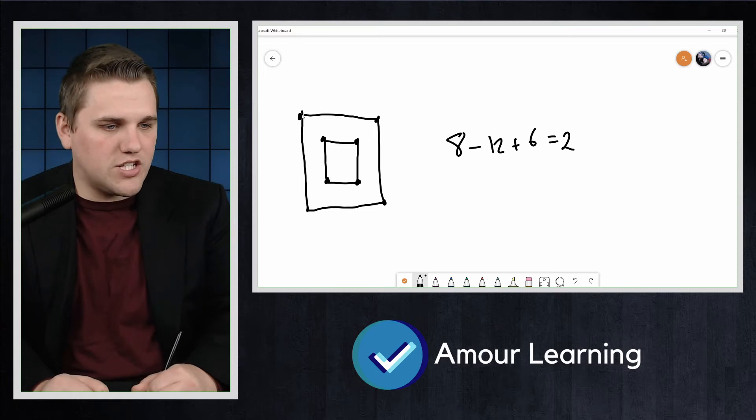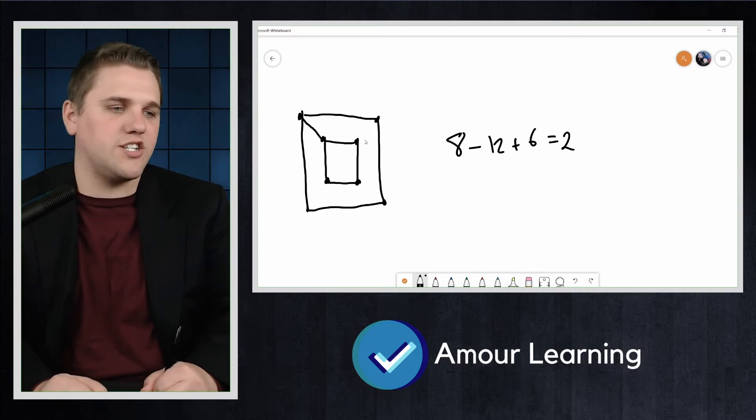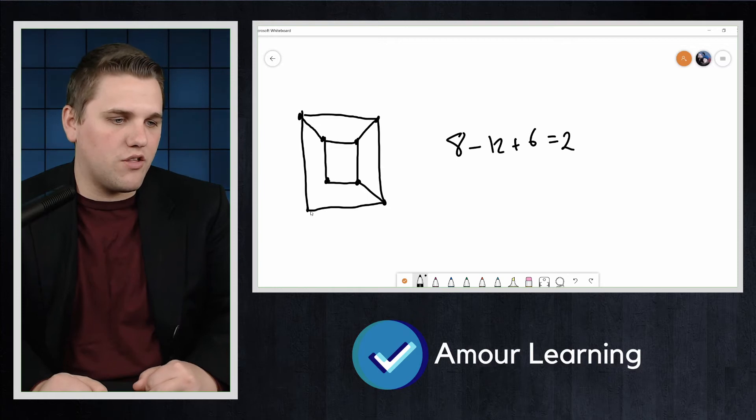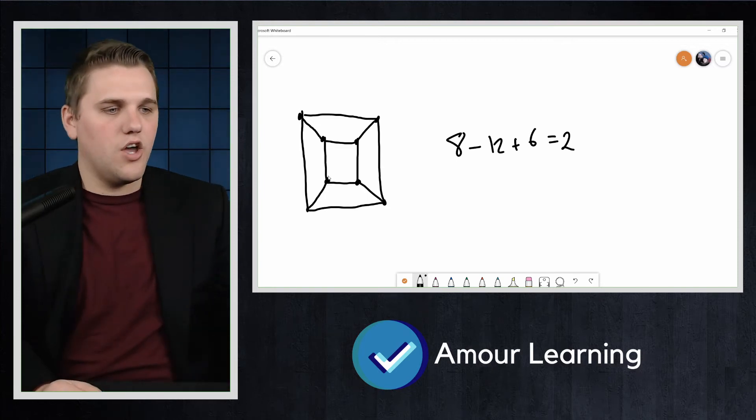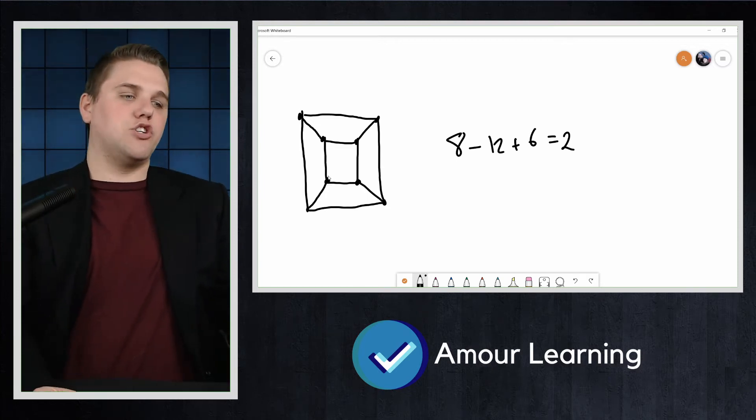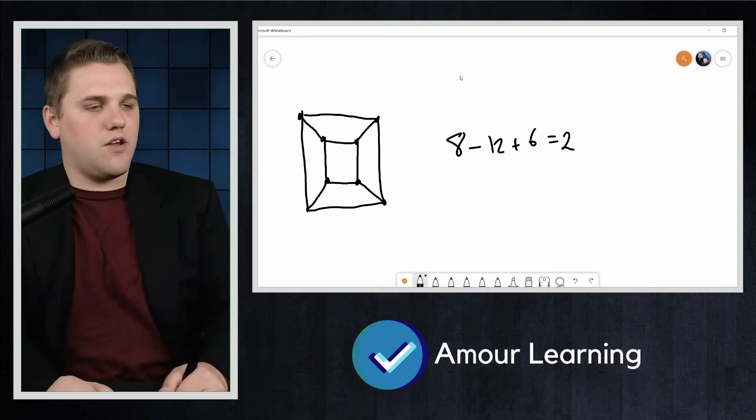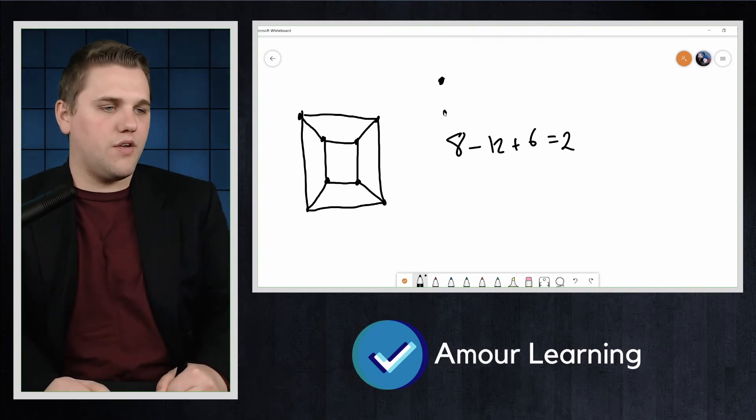And we know that this vertex is adjacent to that one and so forth. So that's one such projection. Now, you're probably familiar with this version of the cube.